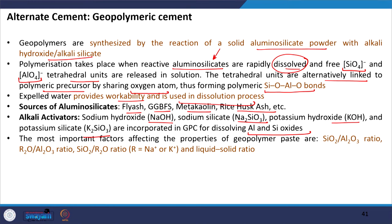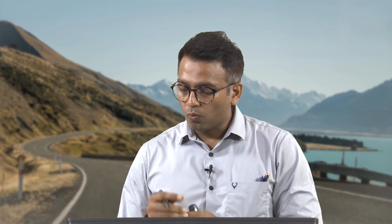Various factors affect the properties of geopolymeric paste. One parameter is the ratio of SiO2 to Al2O3 in the raw material, which affects geopolymeric concrete strength. The ratio of alkali oxide R2O to Al2O3 (where R is sodium or potassium) also affects strength and needs to be optimized. The ratio of SiO2 to R2O (silicon oxide to alkali oxide) also affects final properties. The liquid-to-solid ratio in the mix is another factor. Generally, increase in alkali content and reduction in silicate content increases compressive strength.